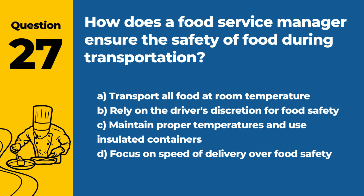Question 27: How does a food service manager ensure the safety of food during transportation? a. Transport all food at room temperature. b. Rely on the driver's discretion for food safety. c. Maintain proper temperatures and use insulated containers. d. Focus on speed of delivery over food safety. Answer: c. To ensure the safety of food during transportation, it's crucial to maintain proper temperatures using insulated containers to prevent the growth of harmful bacteria.